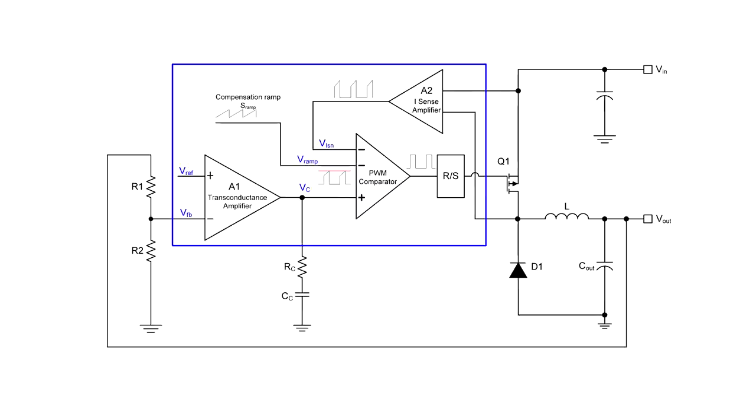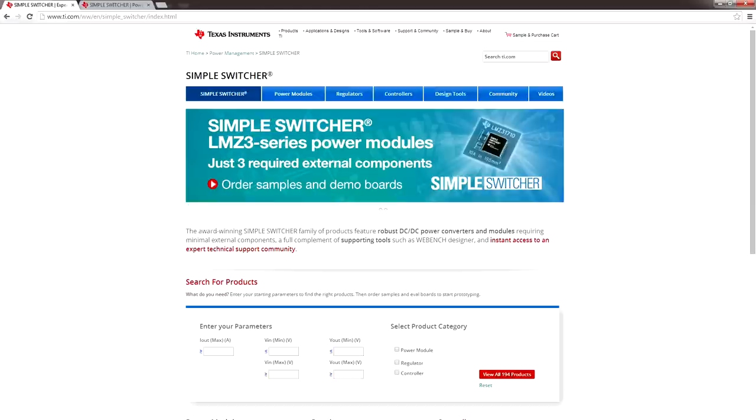We can accomplish this by adding a feedback resistor network at the output, a ramp oscillator, and an error amplifier. We're also going to need a precision voltage reference and a suitable slope comp- Shut up! OK, how about we make things easy.